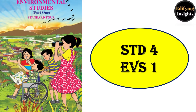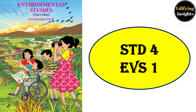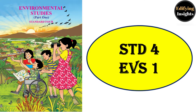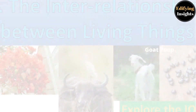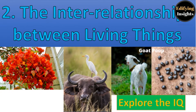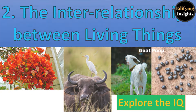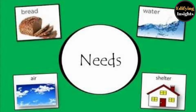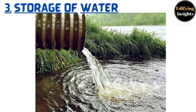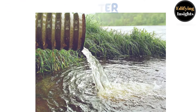Hello all, welcome to Edifying Insights. In this video we are going to learn a chapter from Standard 4 EVS textbook. In the previous lesson we learnt the interrelationship between living things, but the basic need of living things is food, air, and water. So today we are going to learn Chapter 3: Storage of Water.